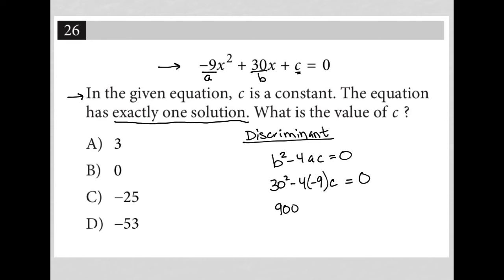30 squared is 900. Negative 4 times negative 9 is positive 36. So 900 plus 36c equals zero. I can subtract 900 from both sides.